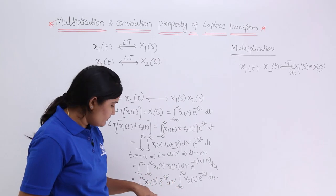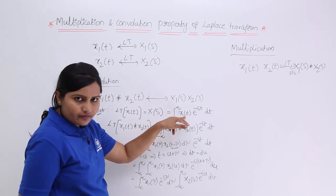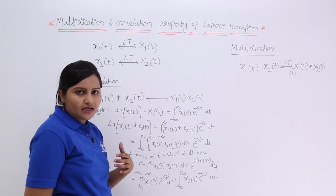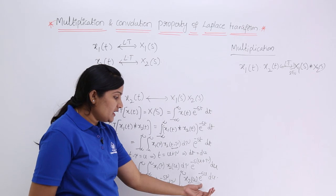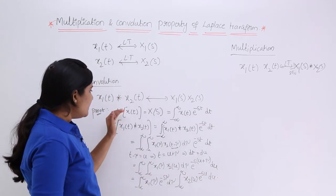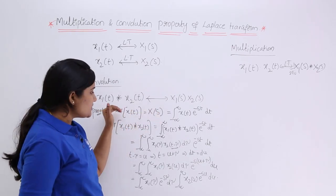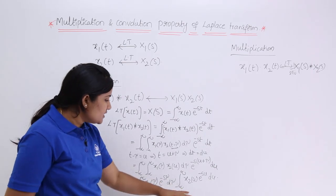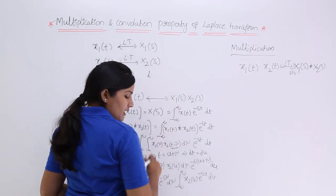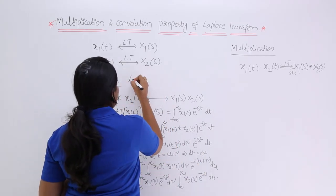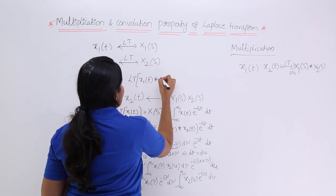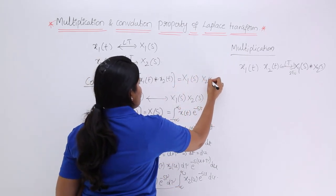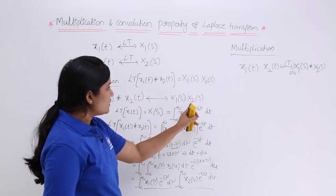Observe these two expressions — they are in the form of the Laplace transform equation. If you replace tau and u with t, then the integral of x1 of t times e to the power minus st dt is the Laplace transform of x1 of t, which equals x1 of s. Similarly the second integral is the Laplace transform of x2 of t, which equals x2 of s. Therefore, the Laplace transform of x1 of t convolved with x2 of t equals x1 of s times x2 of s. Hence proved.